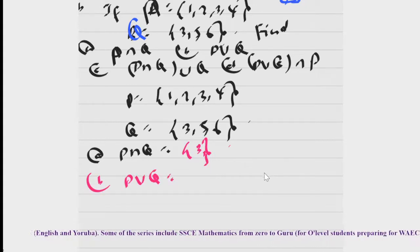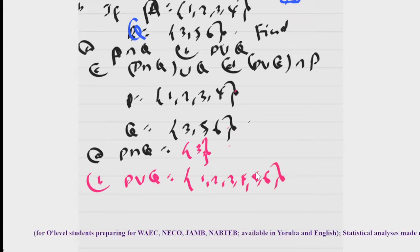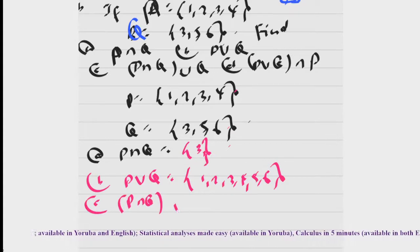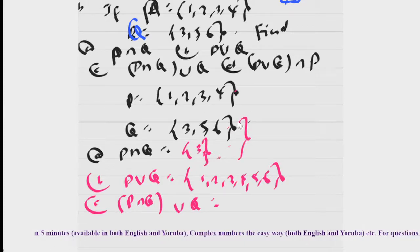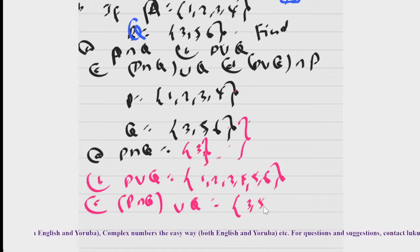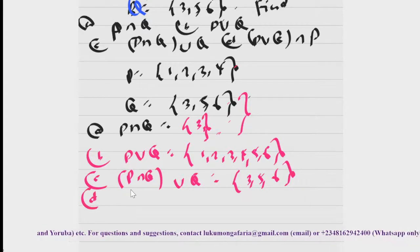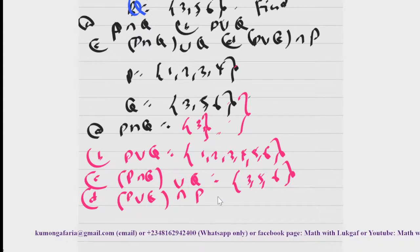What of P union Q? P union Q is the elements in P or Q or both. What are the elements? {1, 2, 3, 4, 5, 6} — that's just it, very simple. And the third one, we have P intersection Q union Q. That is P intersection Q, which is {3}, union Q. So that gives us {3, 5, 6}.